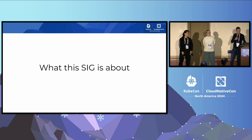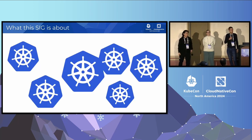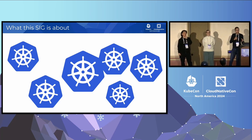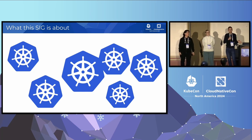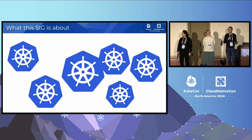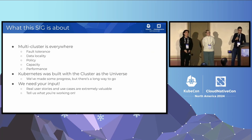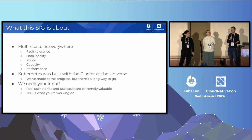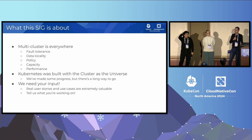So what is this SIG about? As you might imagine, given the name, it's about multiple clusters. Kubernetes has a fairly core assumption that it's about single clusters, but it turns out that that's not really enough in many scenarios. And so it's important to try to understand how end users can work with multiple clusters to meet their various use cases. We don't try to address everything, but multi-cluster is everywhere, more and more, and it's used for a variety of different scenarios.